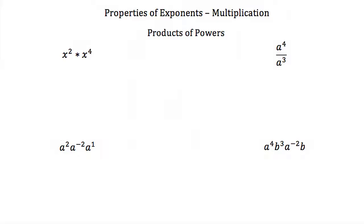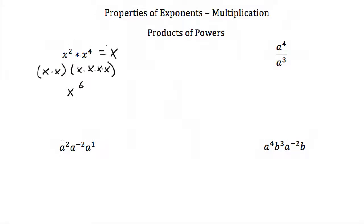The same thing happens when we have variables. Here we have x squared times x to the fourth. x squared is just x times x, and x to the fourth is x times x times x times x. That gives us 6 x's, so this is x to the sixth. Or using the properties of exponents, since they have the same base you add the exponents: x to the 2 plus 4 power, or x to the sixth.